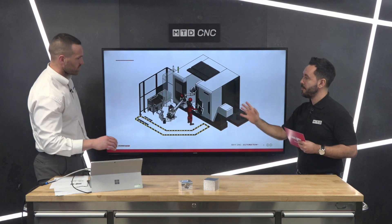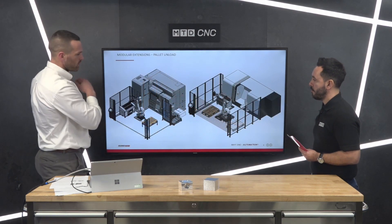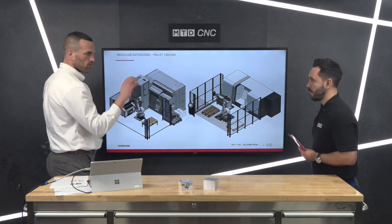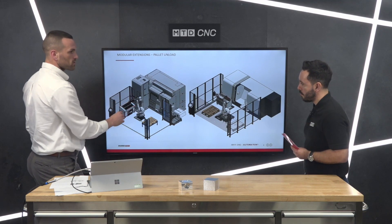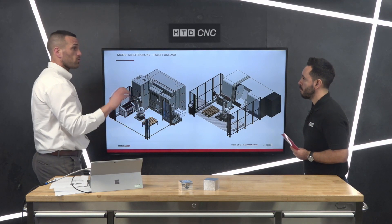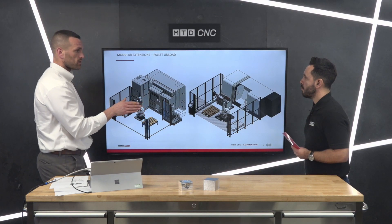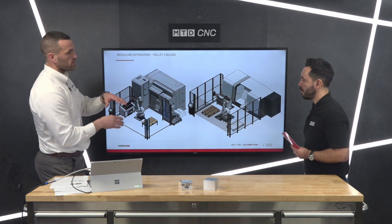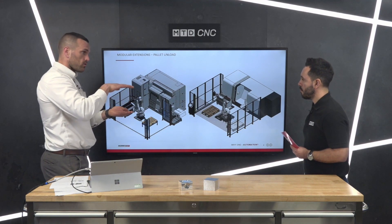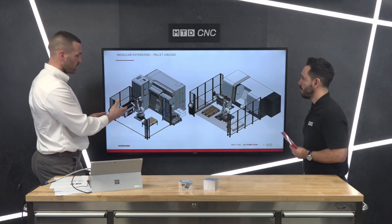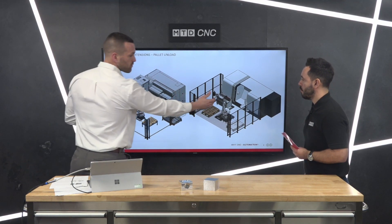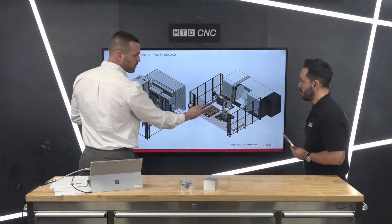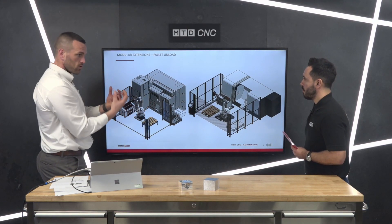Programming-wise, looking at a pallet unload example: the key thing is the robot needs to know a user frame. The user frame is a datum, and based upon that datum you tell it the size of your part and it will know where to go. You tell it the height of the vice and the depth of the vice. For example, user frame one might be the spindle, user frame two the sub-spindle, user frame three the table, and user frame four the pallet.